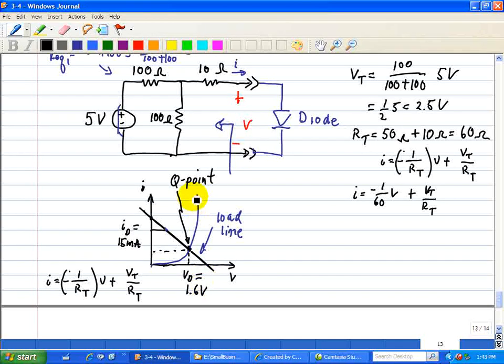This is where if we take the equation, the non-linear equation of the diode, and intercept it with our load line, we would have this point right here, and that turns out to be what I'll just give you, as ID of 15 milliamps and a Vd of 1.6 volts.